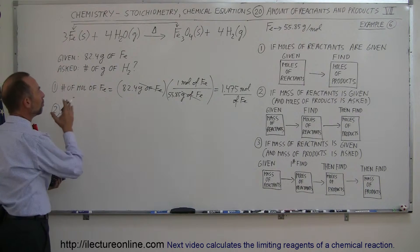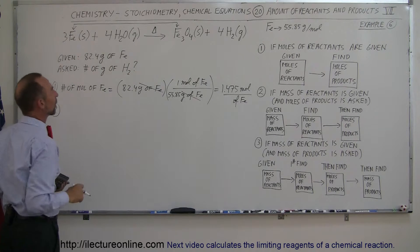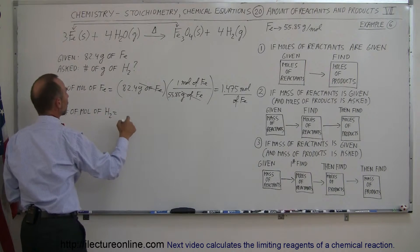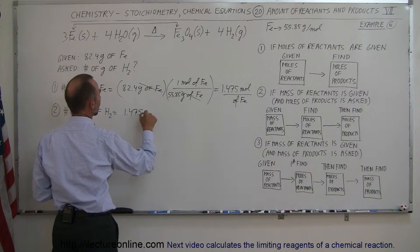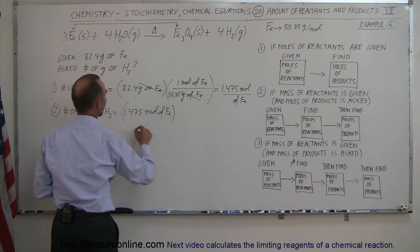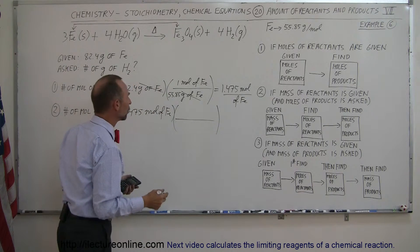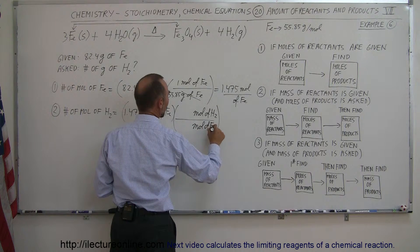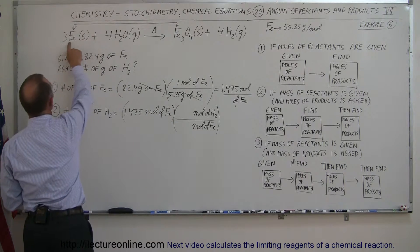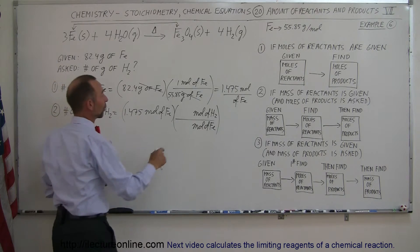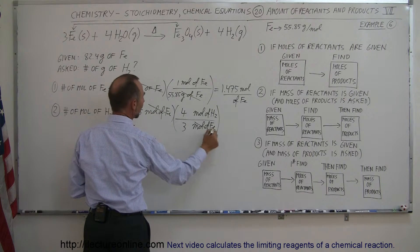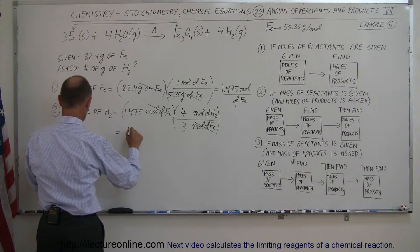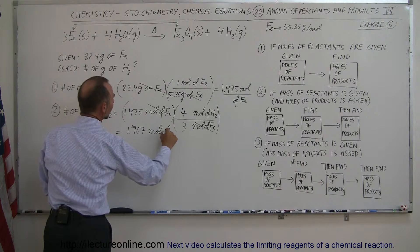Step two: convert from moles of iron to moles of hydrogen gas. The number of moles of hydrogen gas equals 1.475 moles of iron multiplied by the molar ratio from the balanced equation. For every 3 moles of iron we produce 4 moles of hydrogen, so the ratio is 4 moles of hydrogen per 3 moles of iron. The moles of iron cancel out, and 1.475 times 4 divided by 3 equals 1.967 moles of hydrogen gas.